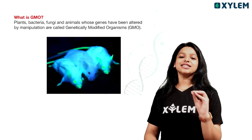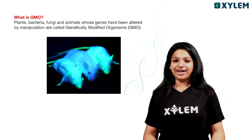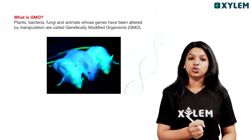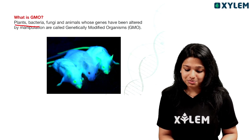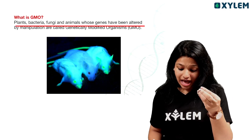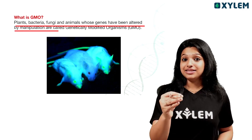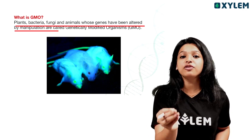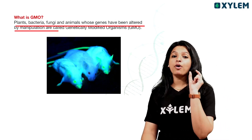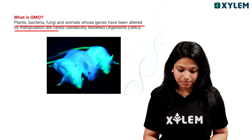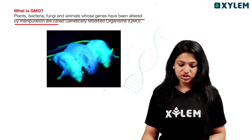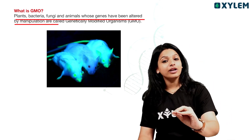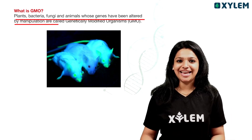What is GMO? In this very specific chapter, we need to note that GMO means genetically modified organisms. Plants, bacteria, fungi, and animals whose genes have been altered by manipulation — those are genetically modified organisms. Genes have been altered by manipulation — that is the definition of GMO.